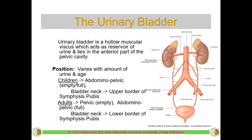In adults, whenever the bladder is empty, it will be a true pelvic organ. But when it is full, it expands to a large extent, becomes ovoid in shape, and now it becomes abdominal-pelvic - partly in the pelvis and partly extending up into the abdomen. So whenever it is empty it will be a pelvic organ, but whenever it is full it will enlarge to such a large extent that part of the bladder extends into the abdomen.